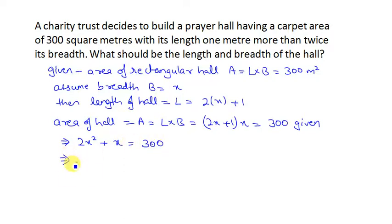This means 2x squared plus x minus 300 is equal to 0. I will break this 1x so that I multiply, the product is 2 into minus 300, which is minus 600.